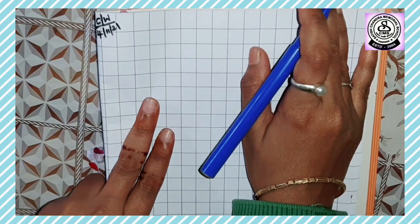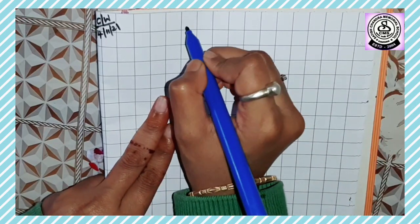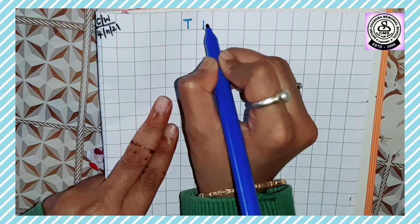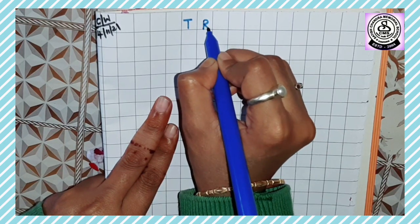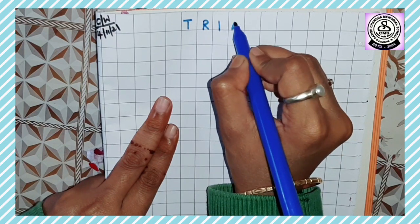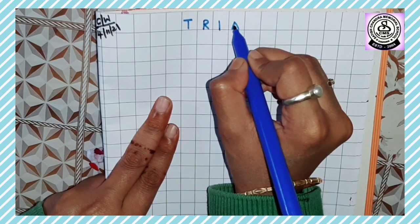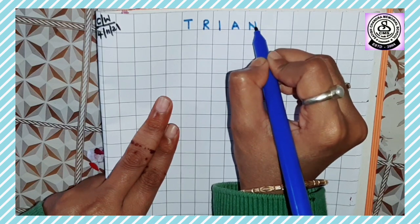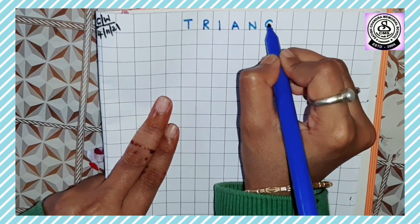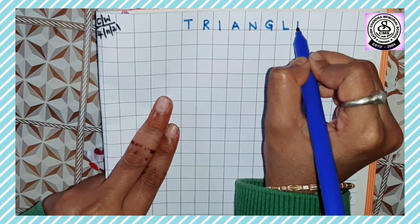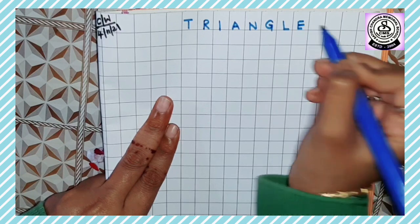Okay, then on the top write heading: triangle. So we're going to draw T-R-I-A-N-G-L-E. Triangle.